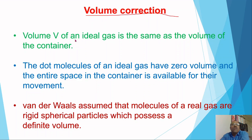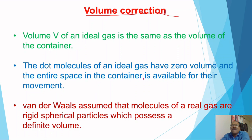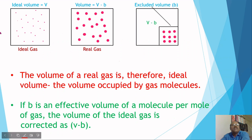Volume correction: the volume V of an ideal gas is the same as the volume of the container. The dot molecules of an ideal gas have zero volume, and the entire space in the container is available for their movement. Van der Waals assumed that molecules of a real gas are rigid spherical particles which possess a definite volume.